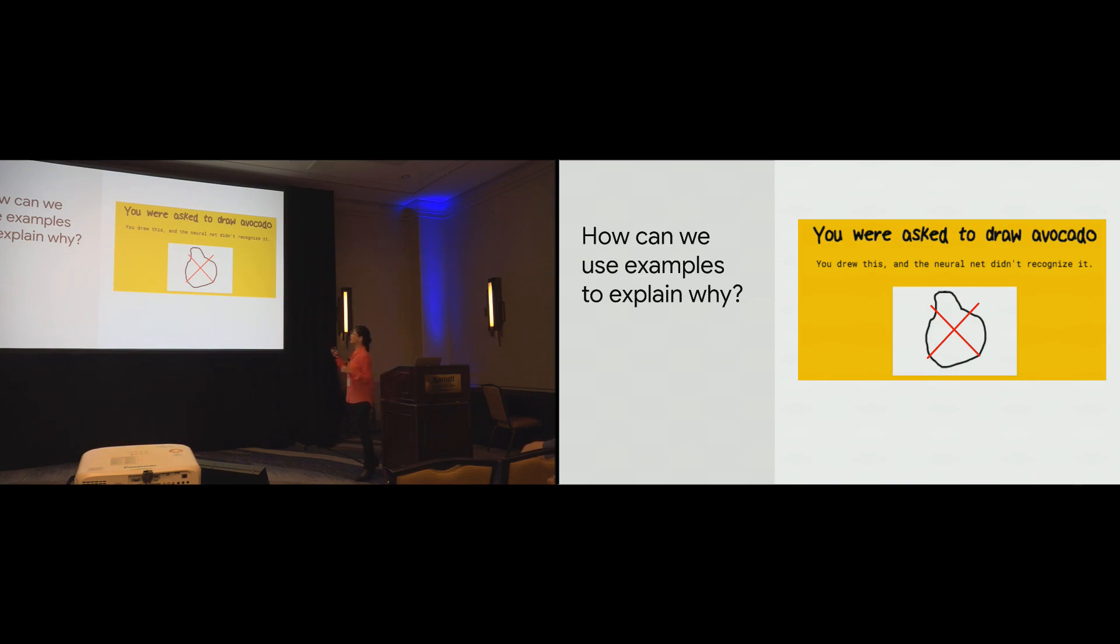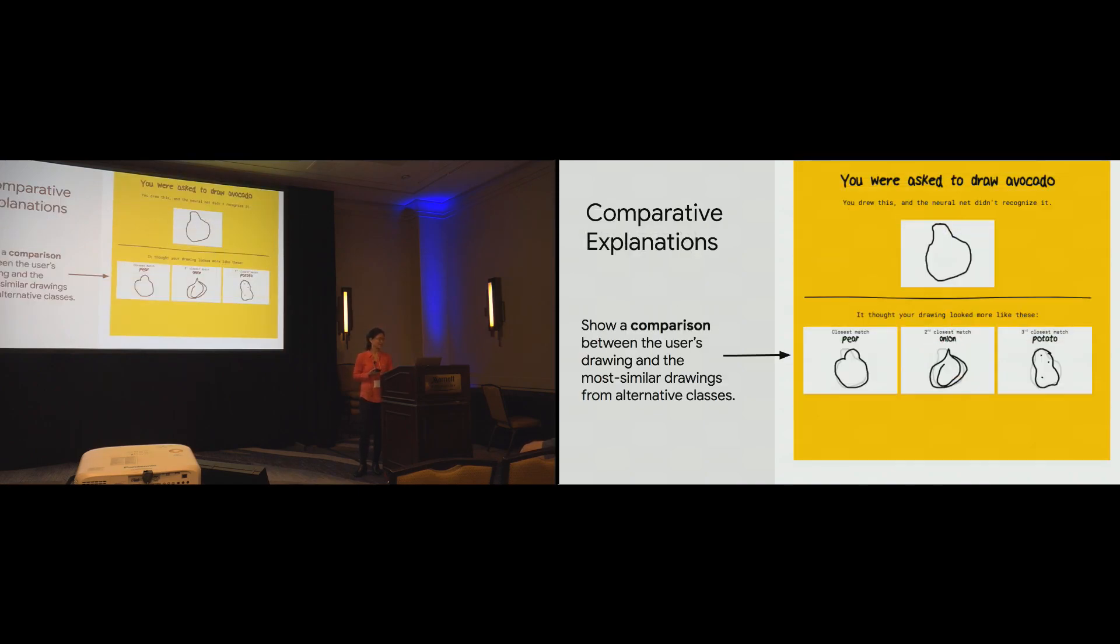So, let's suppose that you drew this avocado, and the AI says that, no, I did not recognize it. Well, how can we use examples to explain why? You can imagine that one way to do so might be to show you how your avocado looks like other objects that aren't avocados. So, that's precisely what we did.